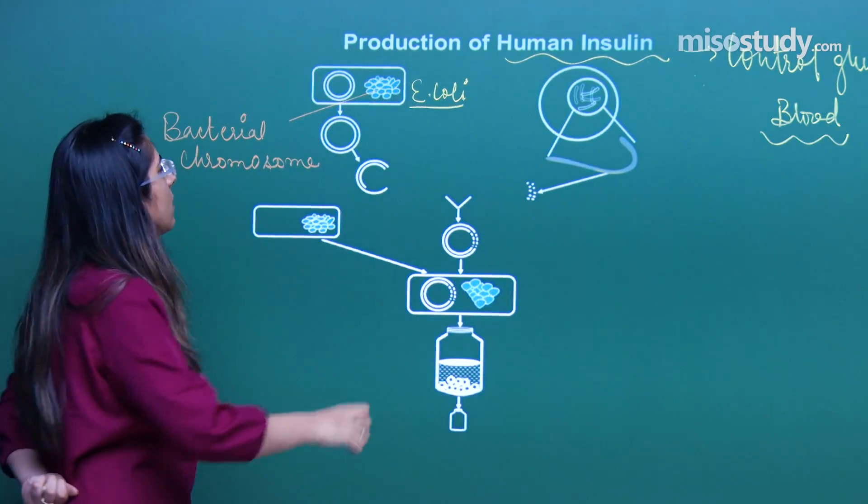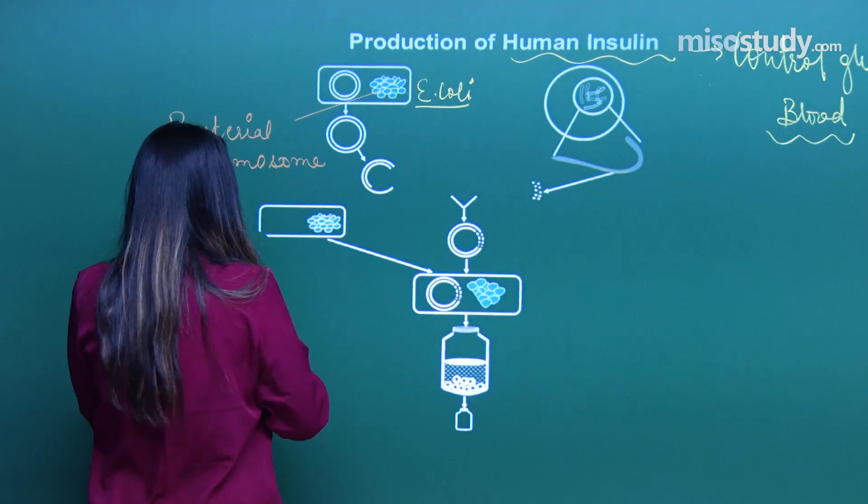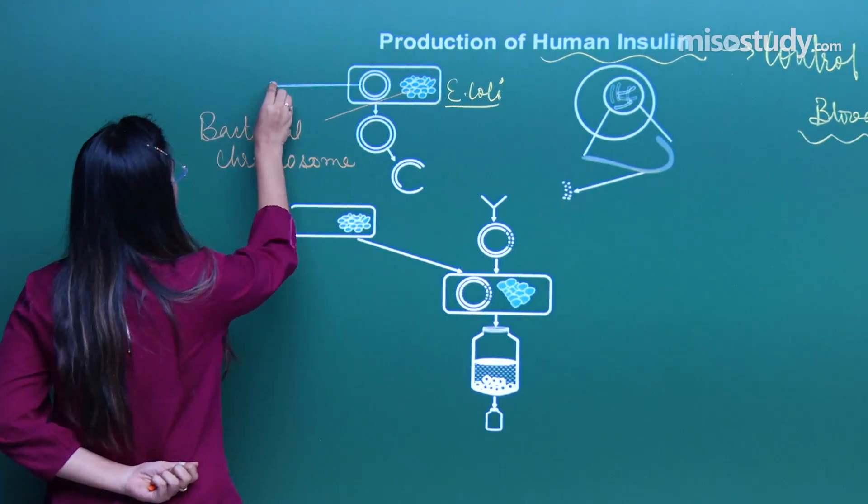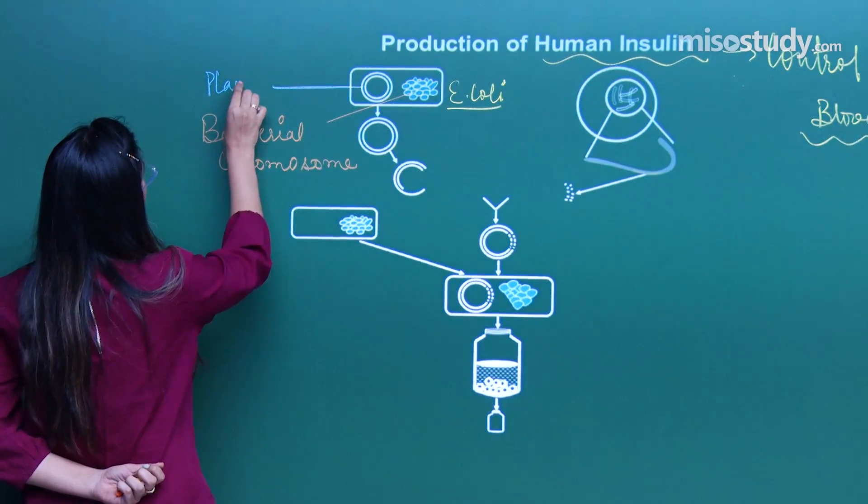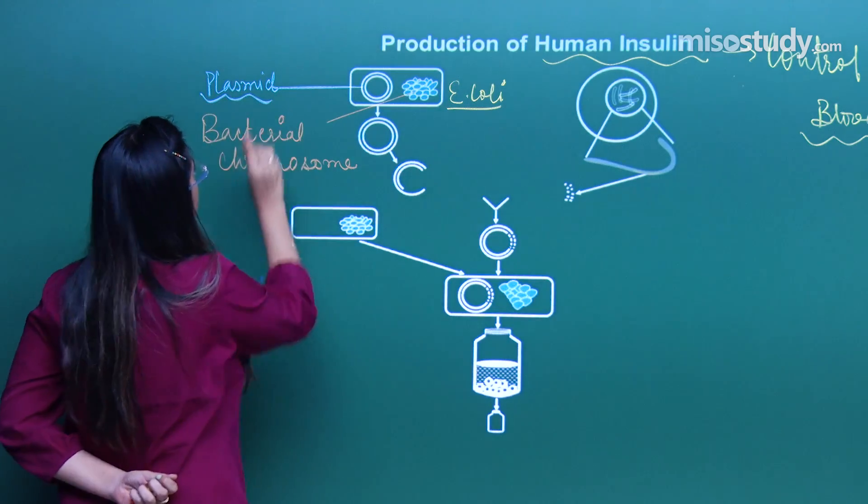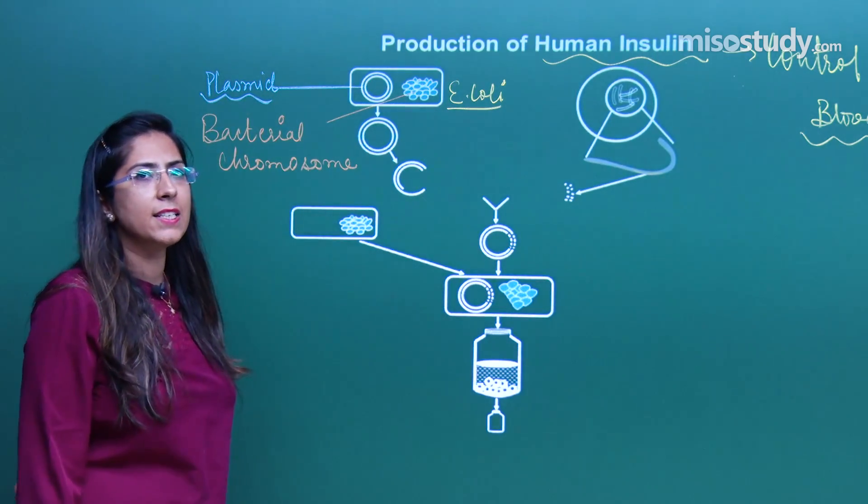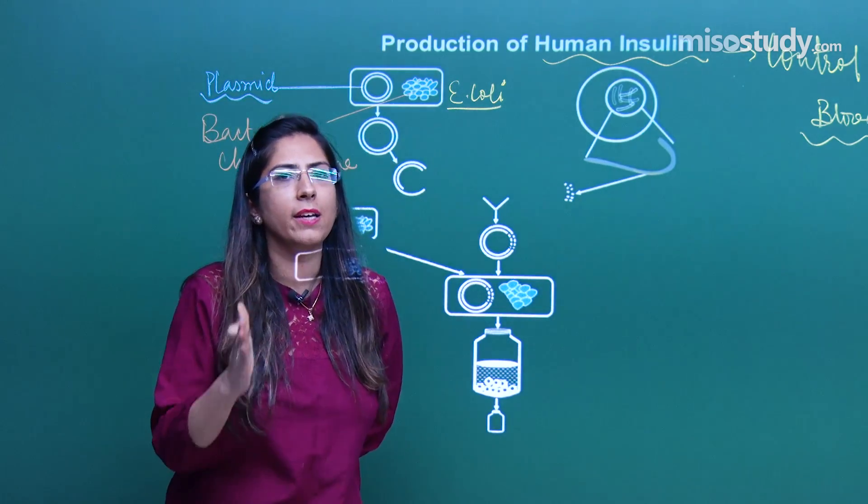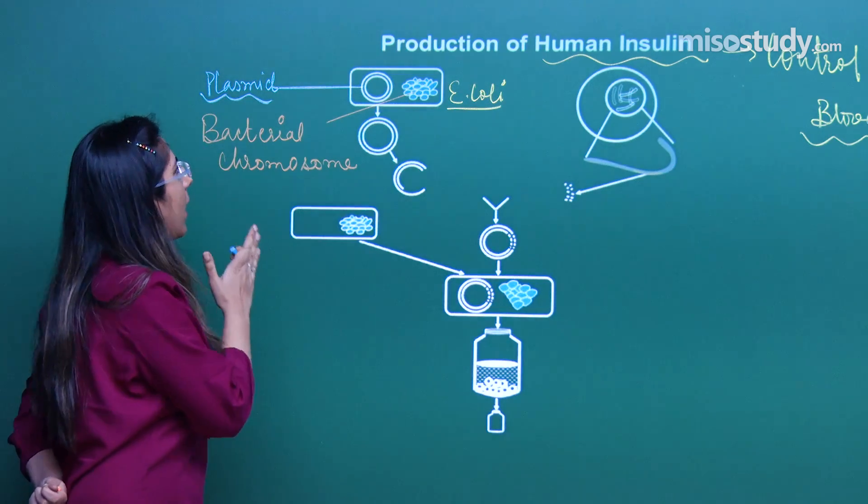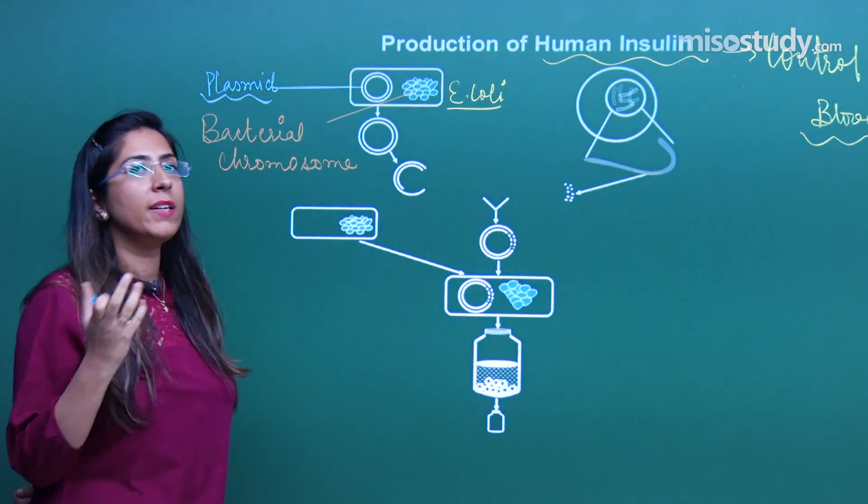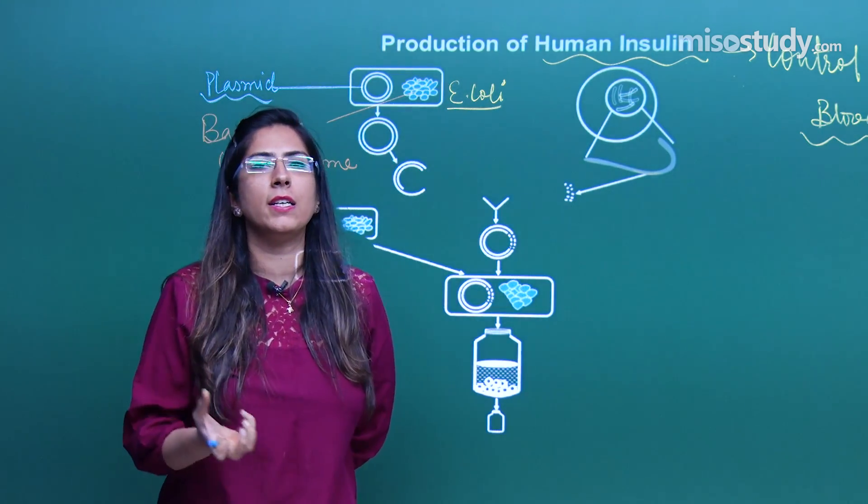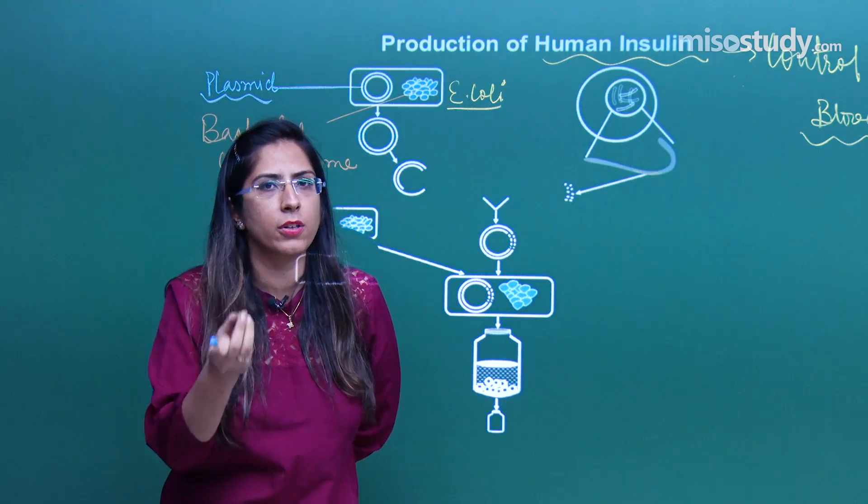Whereas the second one, this rounded structure, this is called plasmid. Now what is plasmid? Plasmid is considered as extra nuclear DNA and plasmid acts as a vector. Now what I have to do? I have to insert that gene which is responsible for insulin production.